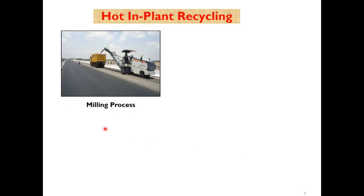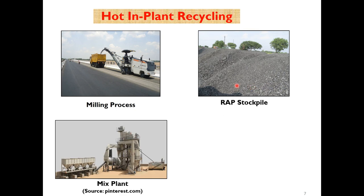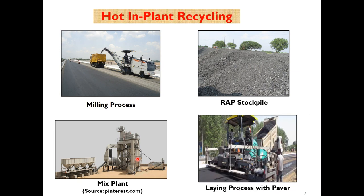In hot in-plant recycling, the first step is to mill the top material. This milled material is transported to the plant and stored in RAP stockpiles. This stockpile material is then used to prepare the mix after adding certain virgin aggregates of different sizes as required, adding the virgin binder, and if required a rejuvenator as well, and then it is laid at site.